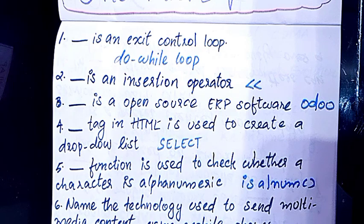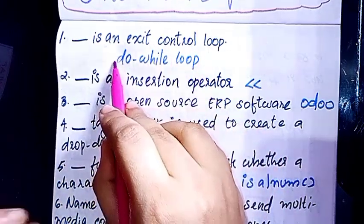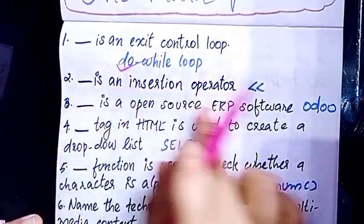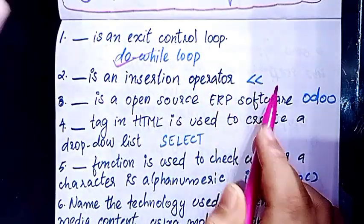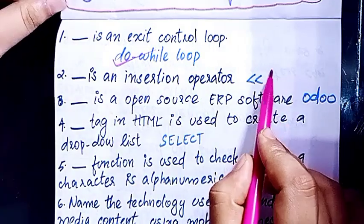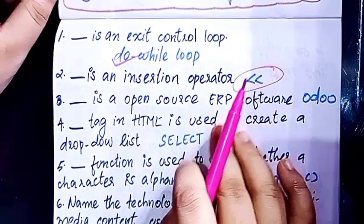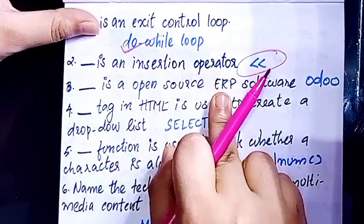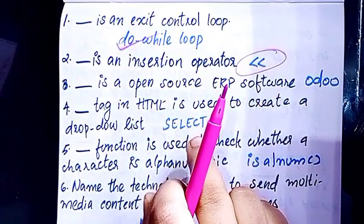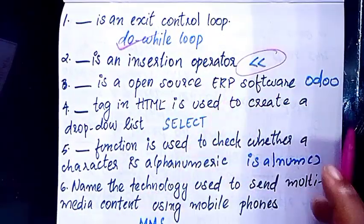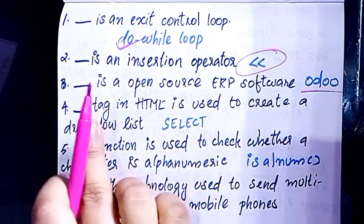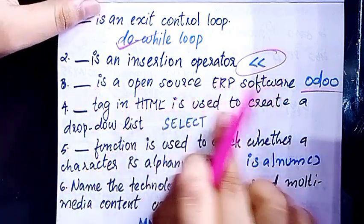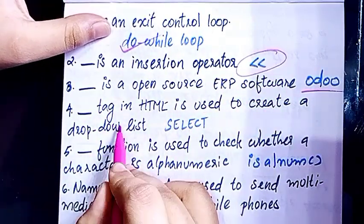First question: dash is an exit control loop. Dash is an insertion operator. Dash is an open source ERP software. Dash tag in HTML is used to create a drop-down list.